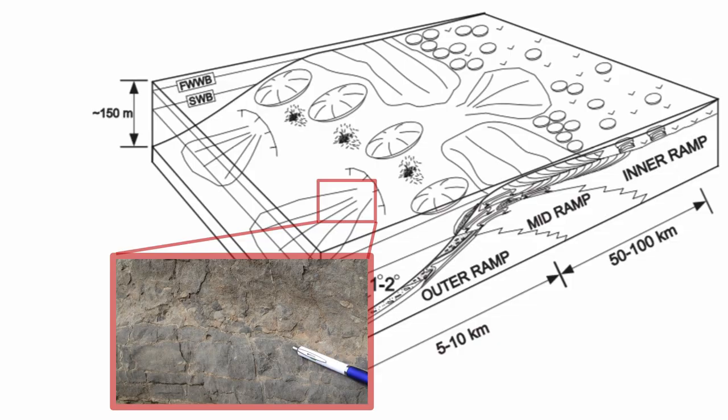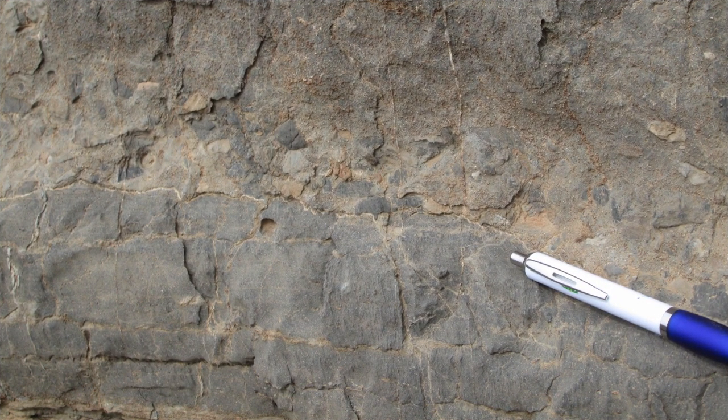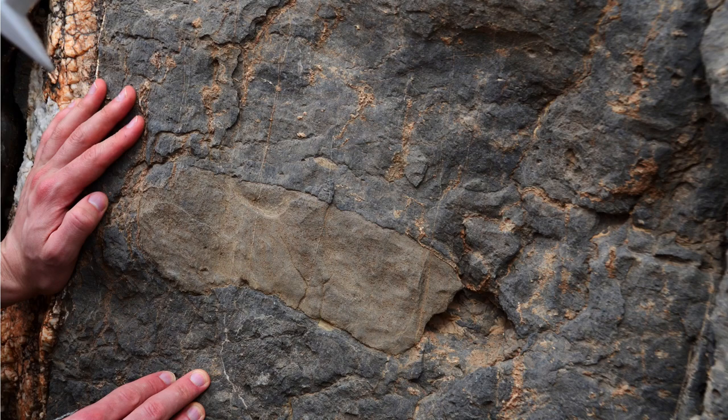If we go down on the outer ramp, we start to see evidence for mass transport deposits. Here's an example where you can clearly see fragments — those are intraclasts of limestone that were transported on the flanks. So even though we don't have skeletal material, we do have very grainy material and we can apply the Dunham texture to these carbonates. And that's another example of a much larger clast that was transported on the slope of that Boa ramp.